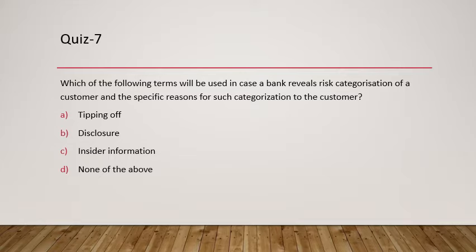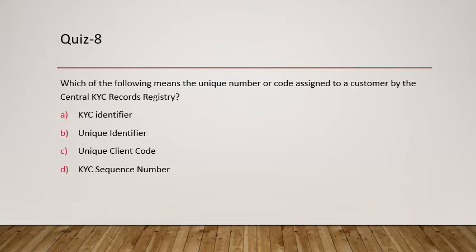Question seven asks which term applies when a bank reveals the risk categorization of a customer and the specific reasons for such categorization to that customer. If a bank discloses the reason why a customer has been made, say, a high-risk customer, such disclosure is called tipping off. Tipping off is not allowed in the context of KYC and AML policy.